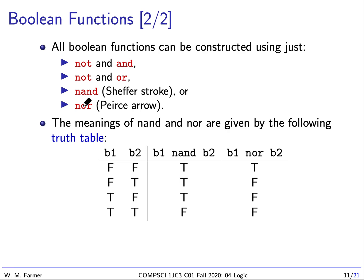These latter two Boolean functions are interesting because with them we can express all other Boolean functions. So we could take a Boolean function that takes a billion arguments and express it using NAND over and over again. NAND stands for NOT AND, and is also called the Sheffer Stroke. NOR is also named the Peirce Arrow. Peirce is a famous 19th century American logician as well as philosopher.